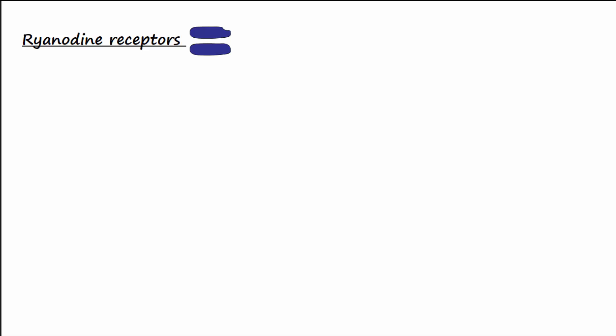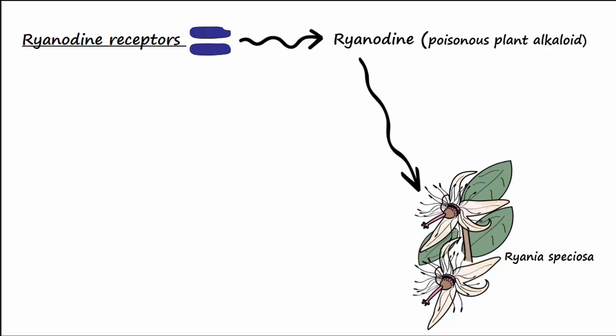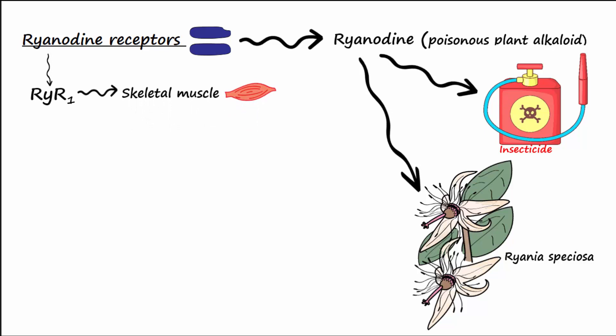The ryanodyne receptor gets its name from the poisonous alkaloid called ryanodyne, which binds to this receptor. Ryanodyne is found in the woody stems of the South American shrub called Rhyania speciosa. It is also used as an insecticide and is a stomach poison that causes insects to stop feeding after they ingest it. The ryanodyne receptor exists in three main isoforms: RYR1 is mostly expressed in skeletal muscle, and a mutation in RYR1 is associated with malignant hyperthermia, characterized by high body temperatures and skeletal muscle contracture.